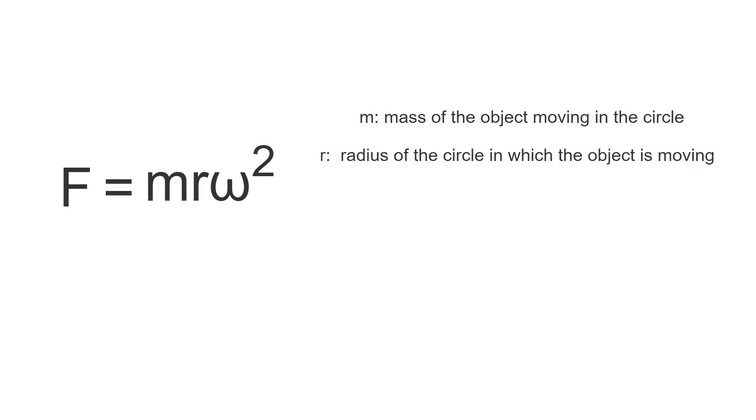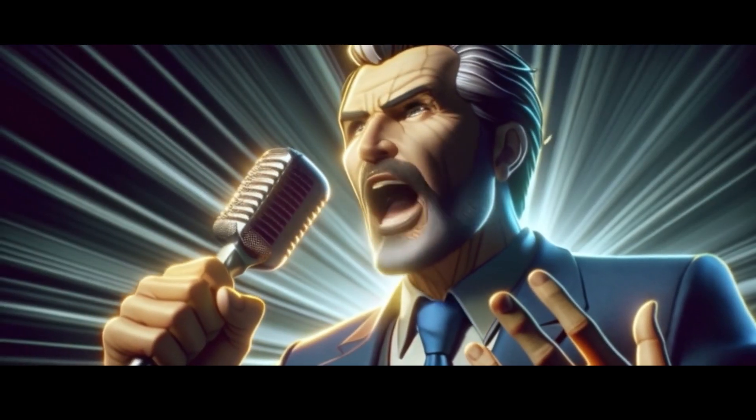The second formula is F equals mr omega squared, where m is the mass of the object moving in the circle, r is the radius of the circle in which it is moving, and omega is the angular velocity of the object.